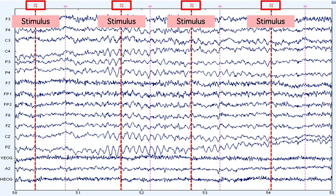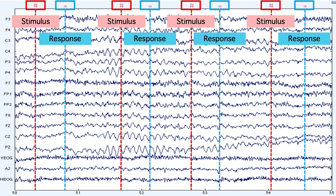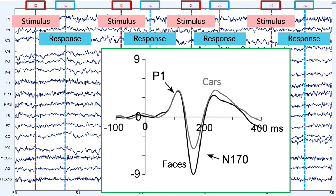In a typical ERP experiment, you have a series of stimuli, each of which is marked with a distinct event code in the EEG data file. You might also have a response for each stimulus, which would also be marked with event codes. Usually, we're interested in looking at the ERP related to the stimuli, so the stimulus is time zero in our ERP averages.